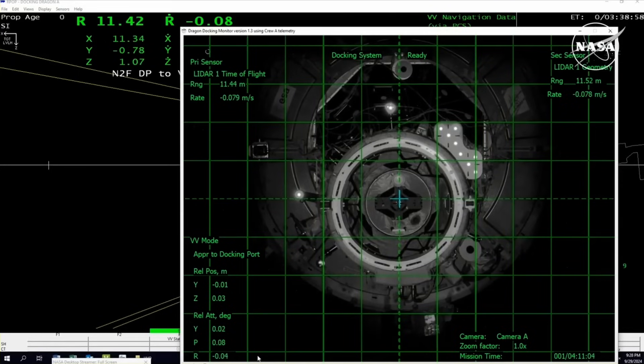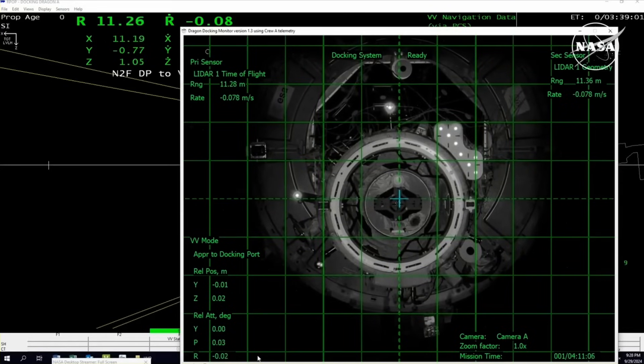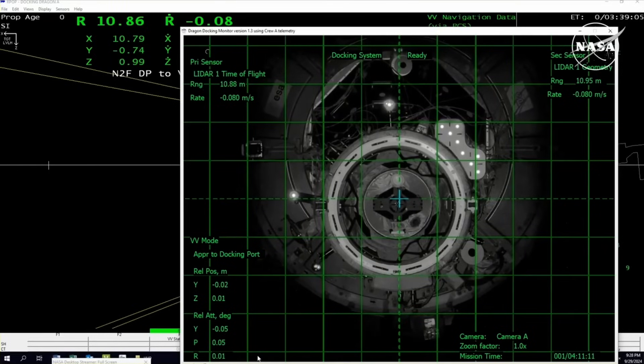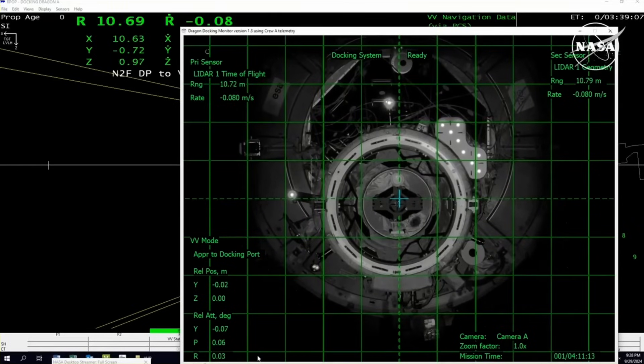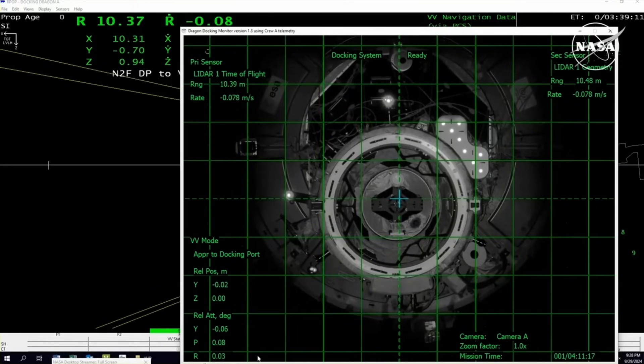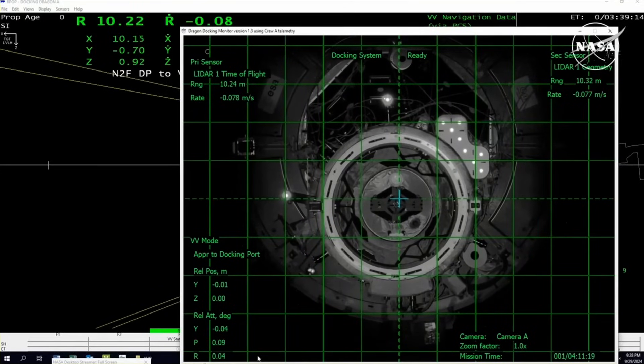This is happening in the dark. We can hold and wait for different lighting conditions if we needed to. But because we have this LIDAR technology, we're able to continue moving in. And if you look in the top left, you can see we're now just about 10 meters away from the International Space Station. Confirmation from the crew, 10 meters away.